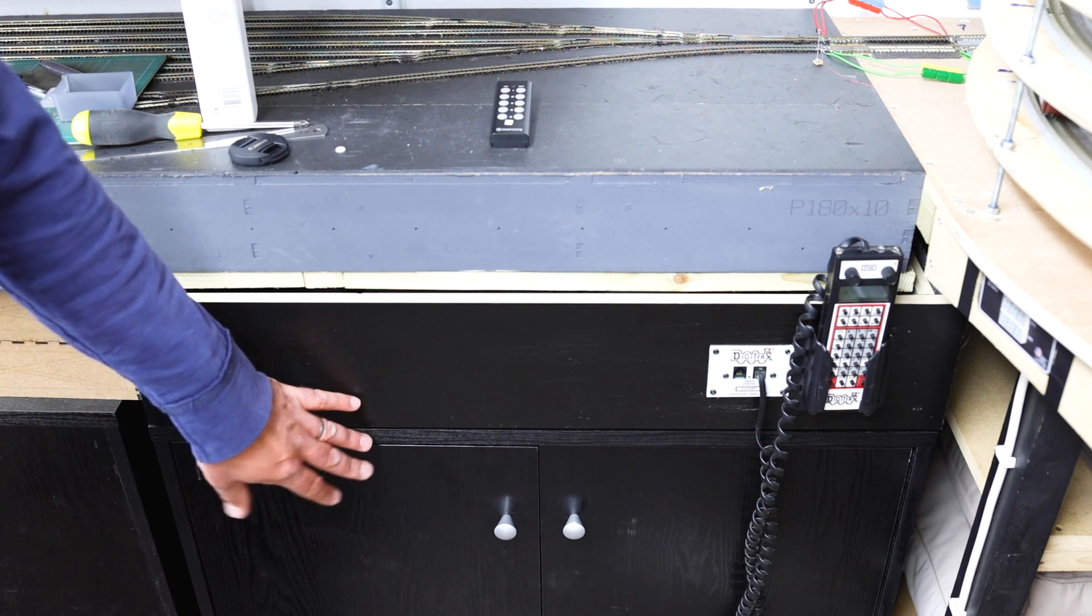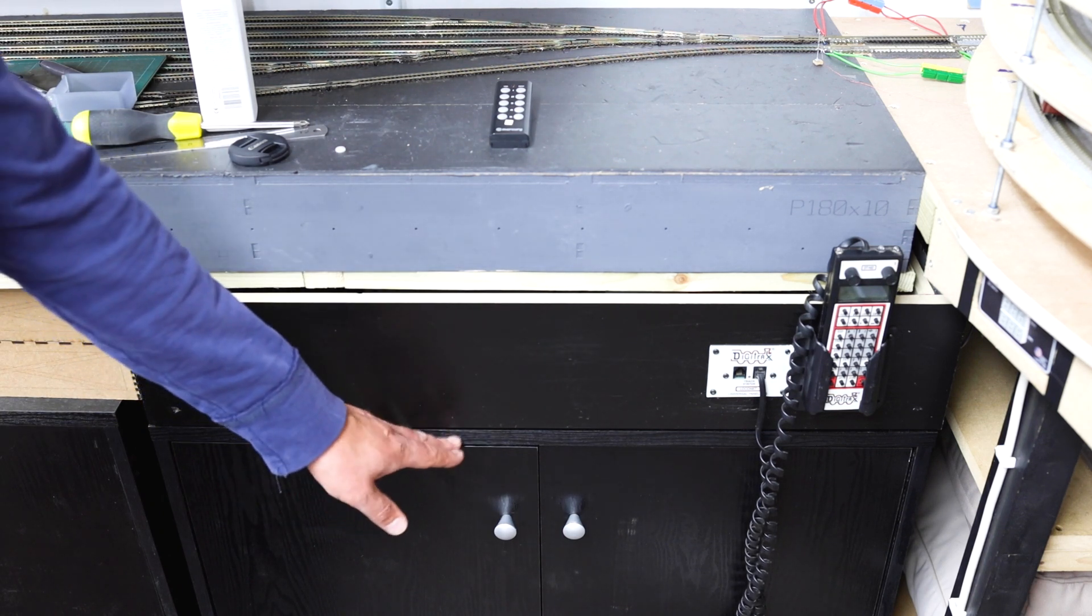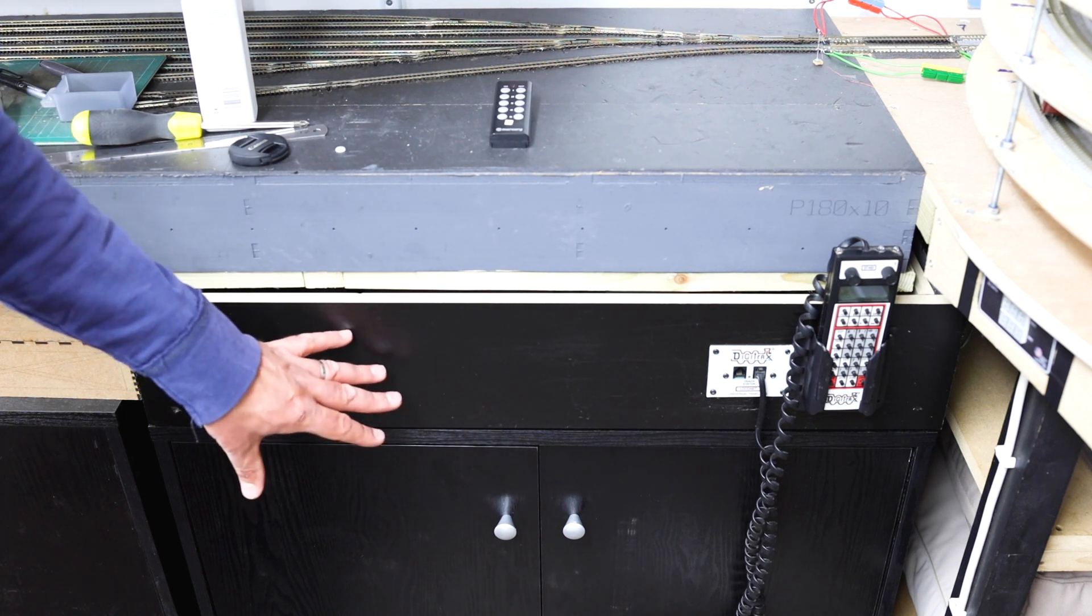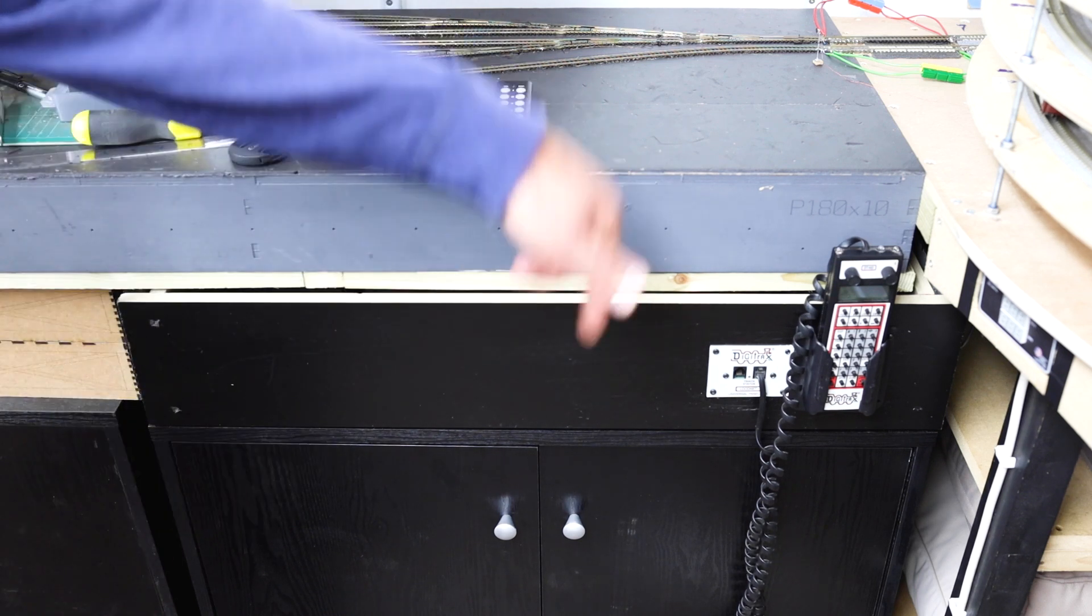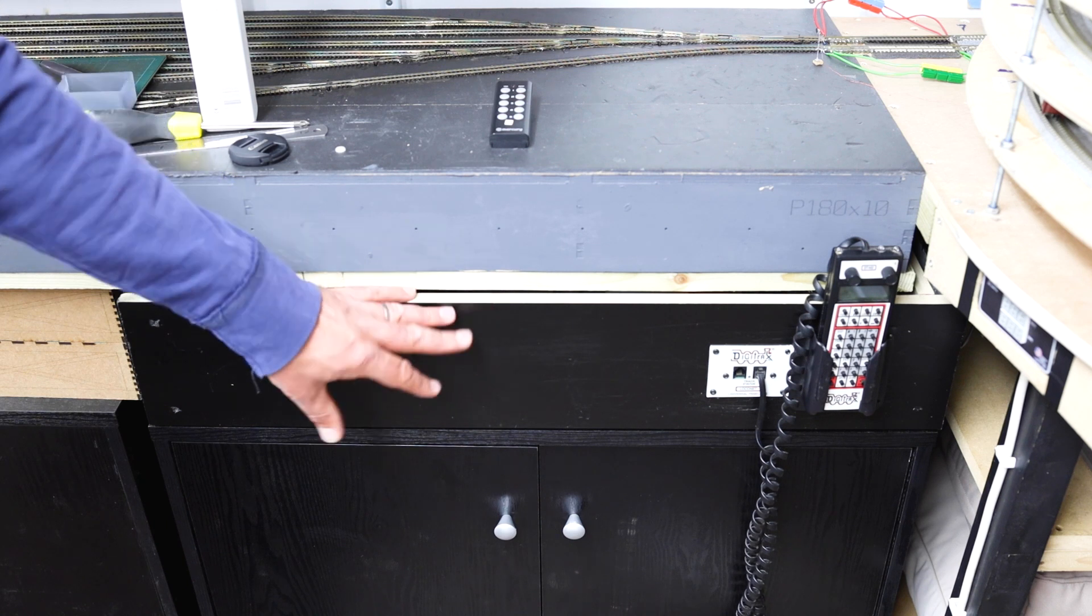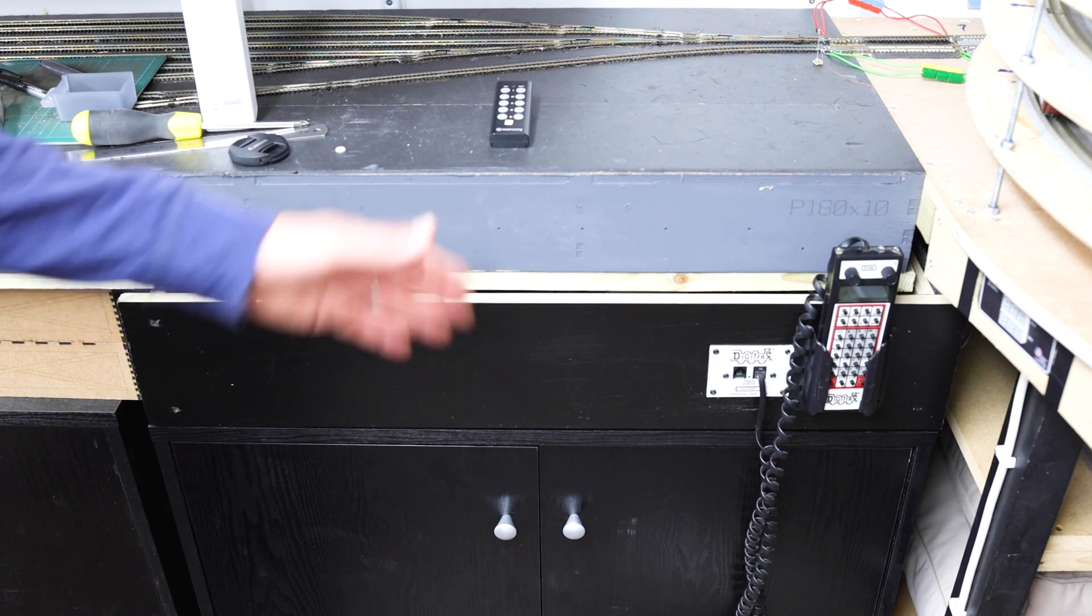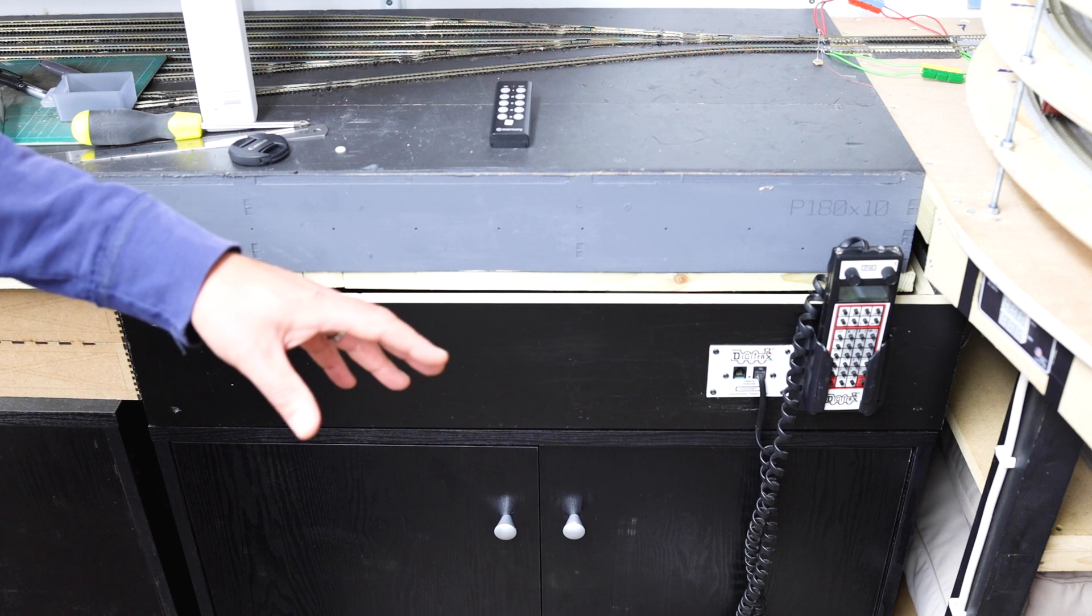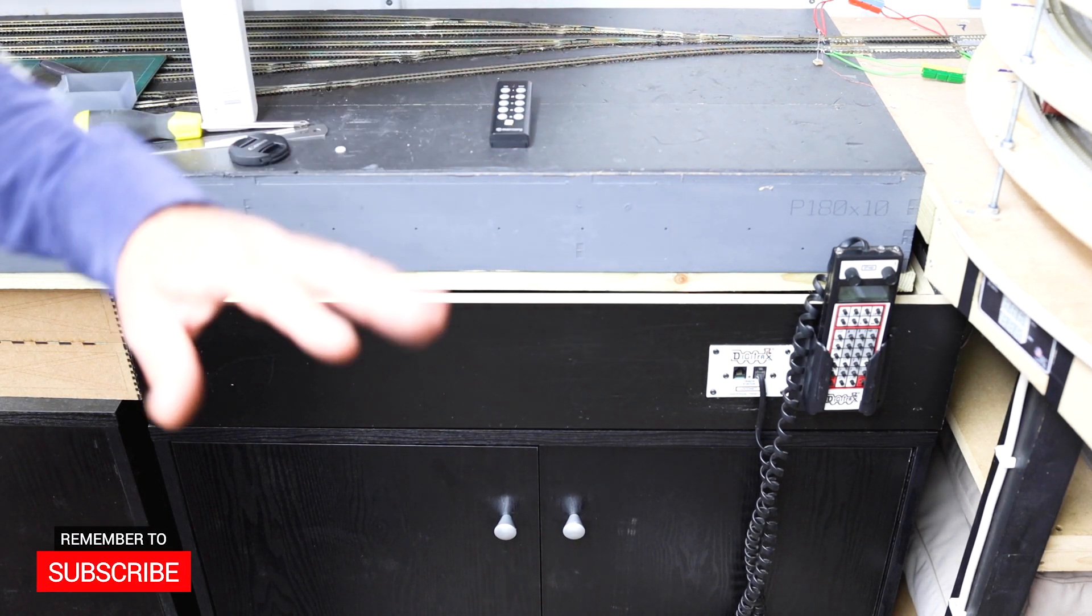As you can see here I've got cupboards underneath my layout. I've got a whole series of cupboards all the way along and there's a gap between the bottom of the staging yard and the cupboard itself. I've seen a video on YouTube by an Australian guy called Digitracks Dad. I'll put a link to his video in the description down below. He'd come up with this DCC drawer where everything was inside a drawer that was easily accessible. He could just pull it out and everything was where he needed it to be. It was easily replaceable. If anything broke or burnt out, you could easily just take it out and replace it.